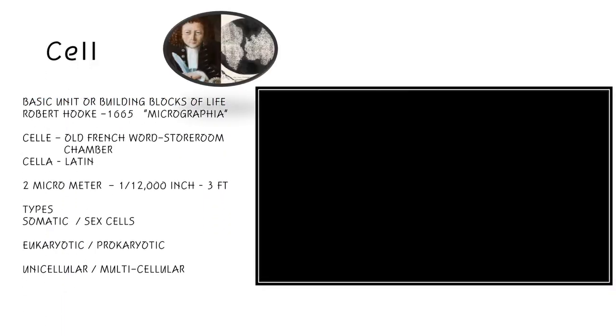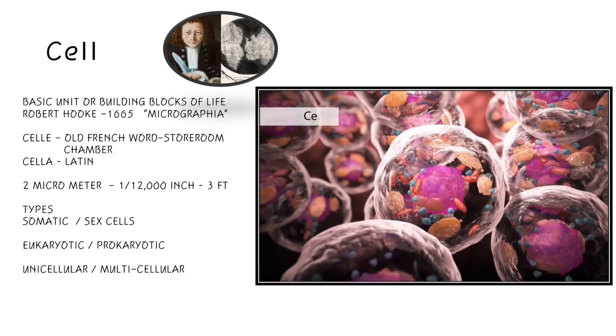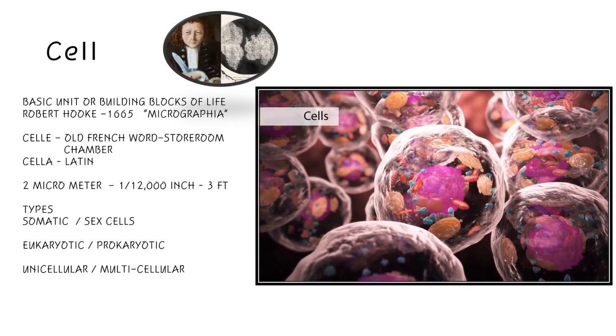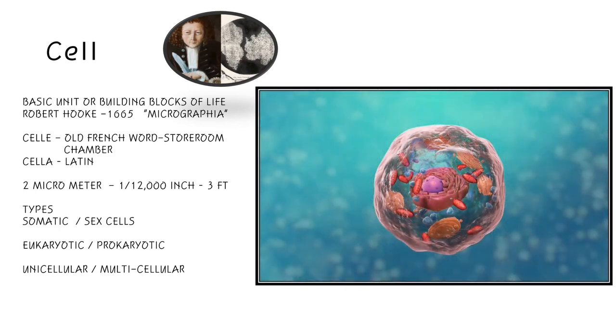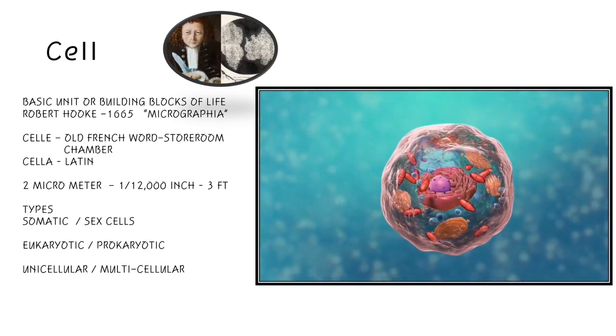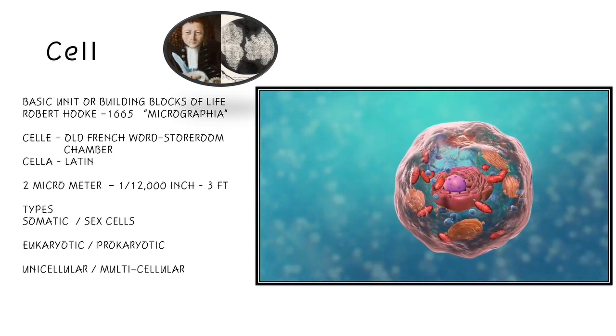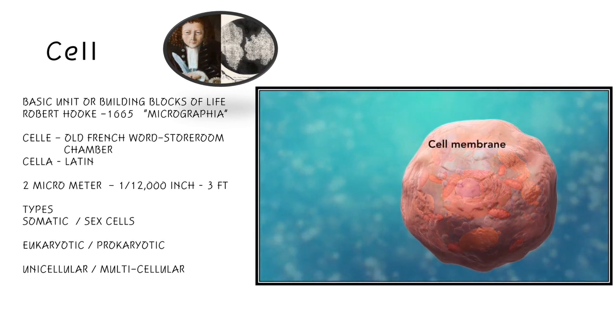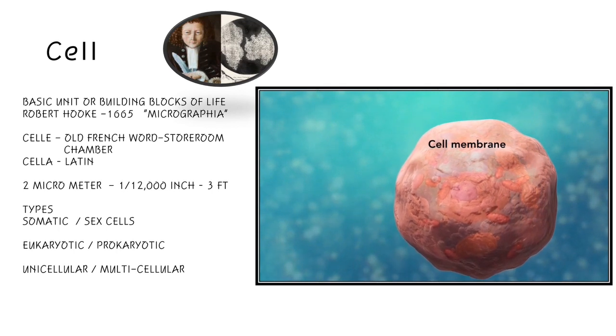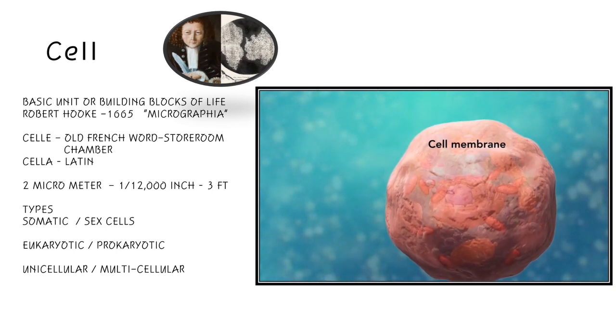The cell is the basic unit or building blocks of life, also known as the smallest living unit of an organism. The cell was first described by Robert Hooke in 1665 in his famous book, Micrographia.